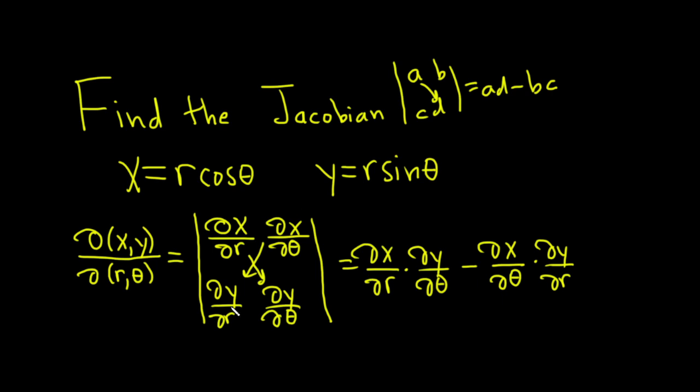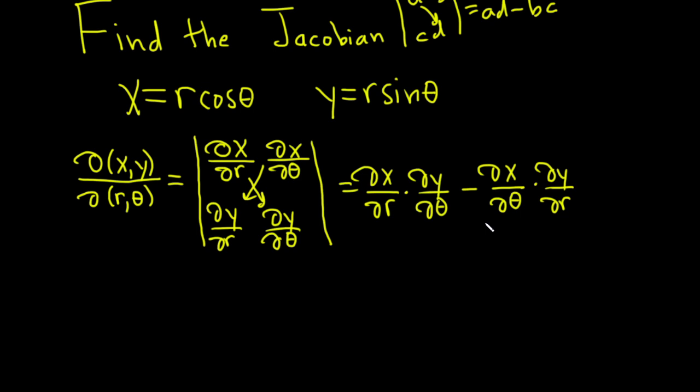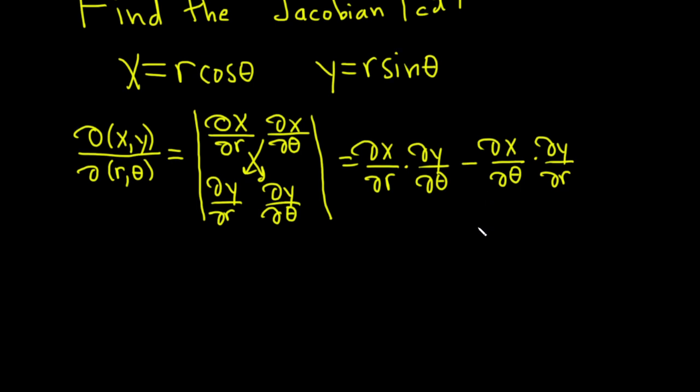Okay, so I like memorizing it like this, but let's just go ahead and work it out. So in this case, we can find everything quite easily. So del x del r: we're finding the partial of this with respect to r. We treat theta as a constant. In particular, the cosine theta would be constant in this case. So the partial derivative here will just be cosine theta because the derivative of r is 1.